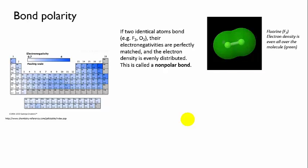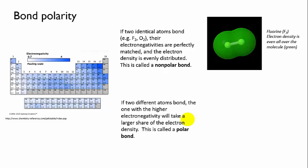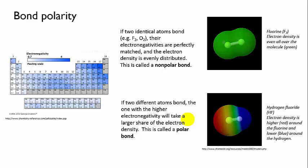However, if a covalent bond forms between two different atoms, then the atom with the higher electronegativity will exert a greater pull on the electron density, and it will not be evenly shared. This is a picture of hydrogen fluoride. The red indicates high electron density, and the blue indicates low. And you can see that the very electronegative fluorine atom, the larger one on the left, has taken the lion's share of the electron density.